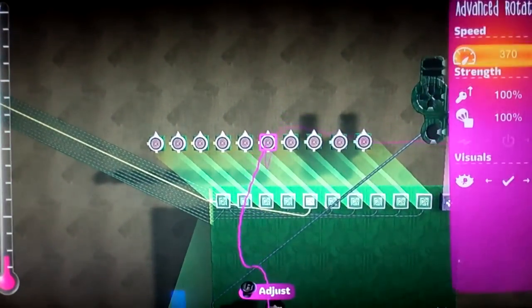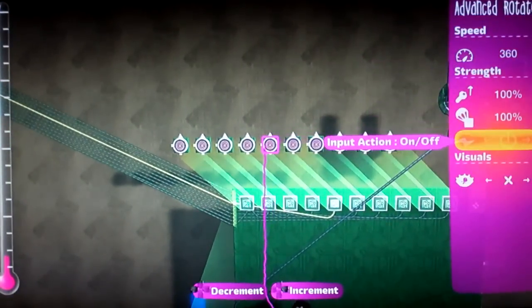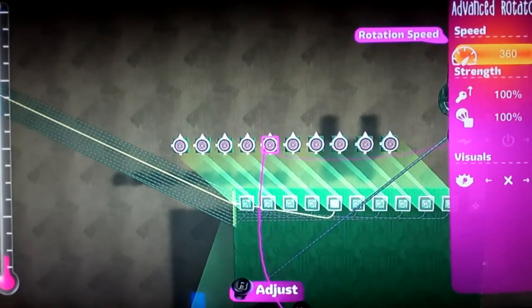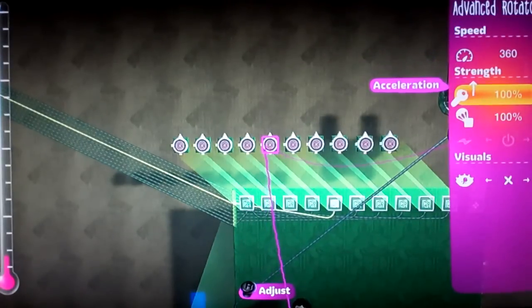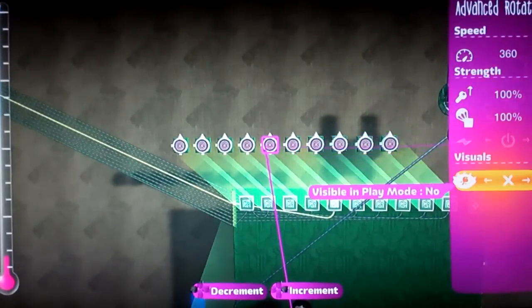The next thing you're going to want to do for one player controls is you're going to want to get advanced rotators, with the rotation speed 360, acceleration 100, deceleration 100, input action on.